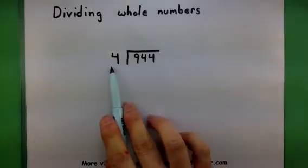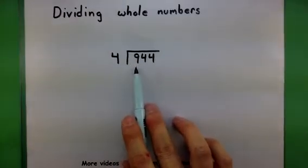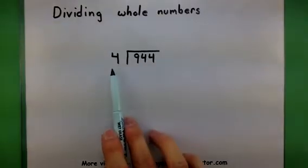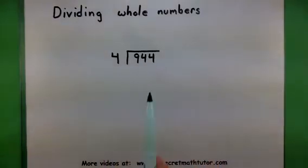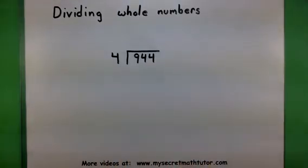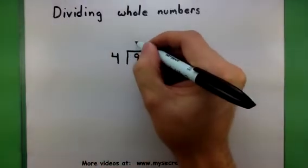So I'm going to take 4 and ask, how many times does it go into 9 evenly? I know that 4 times 2 is 8, so 8 would fit into 9. But 4 times 3 is 12, and that's too big. So the largest number that I can get that will fit into 9 is actually just 2.